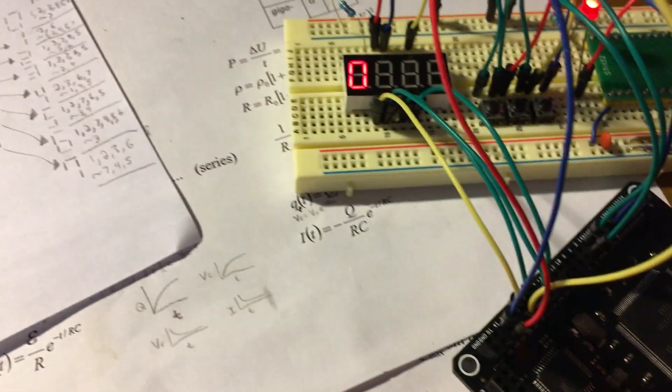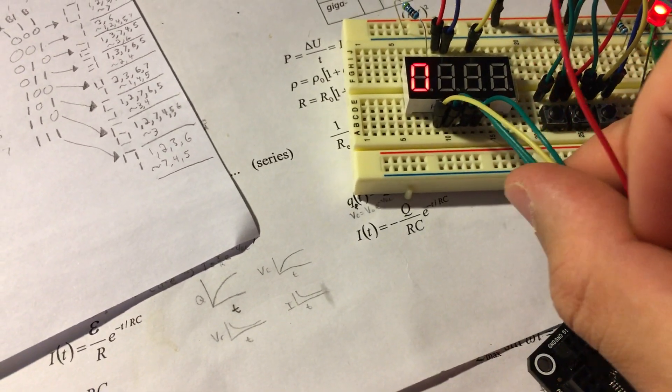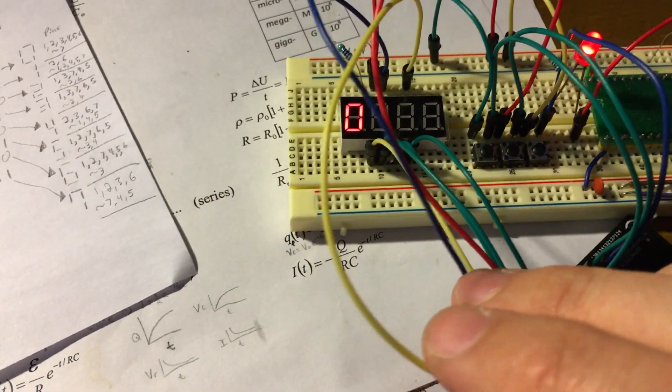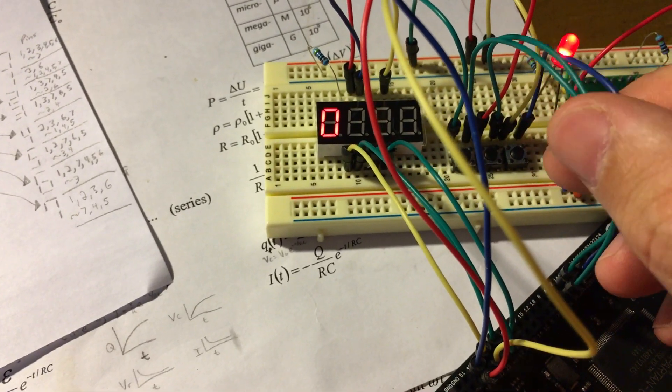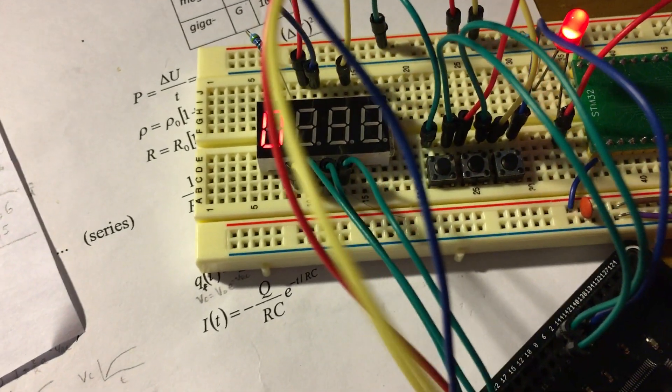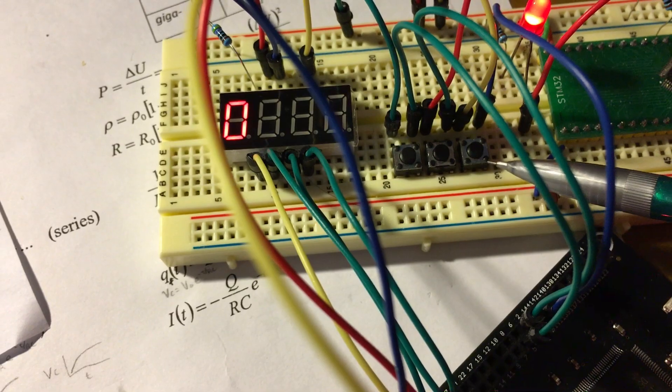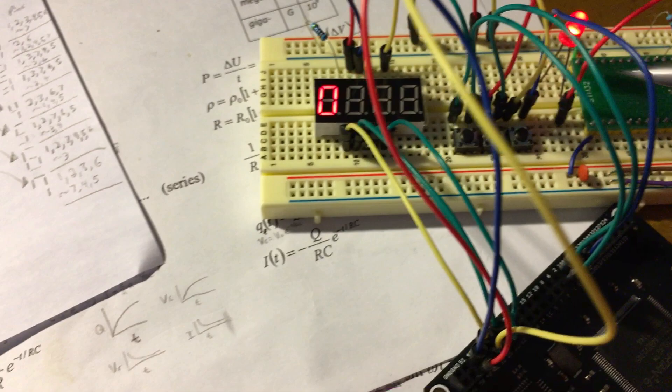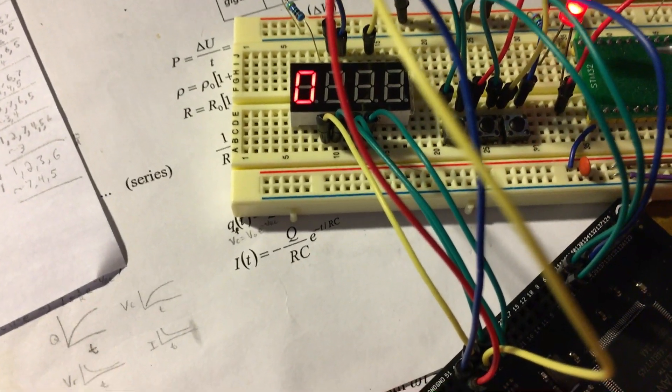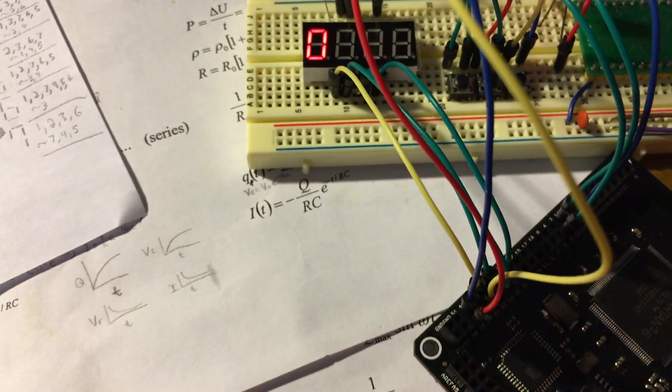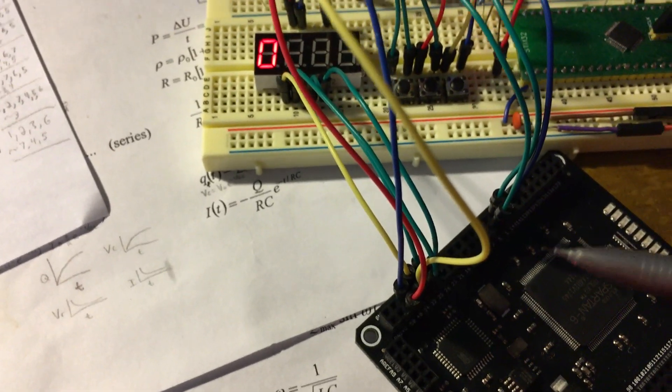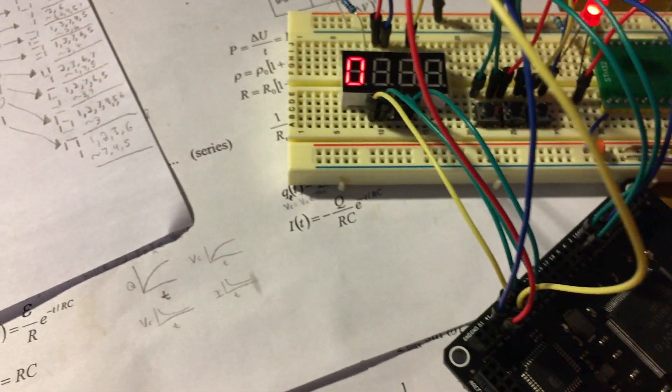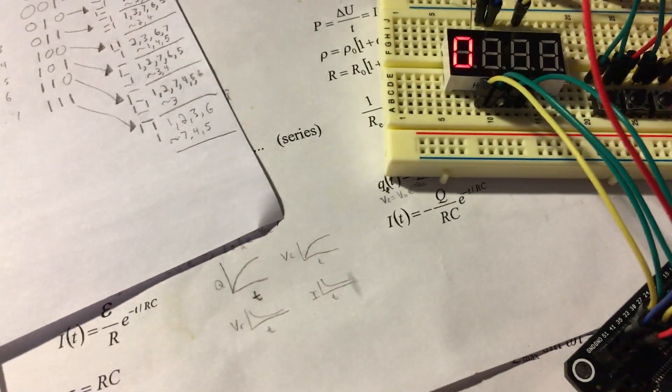We have 7 outputs to the 7 segments with these wires here and 3 inputs coming from 3 buttons. The 3 buttons are treated as binary numbers. The FPGA receives that binary number and translates it into a decimal digit.